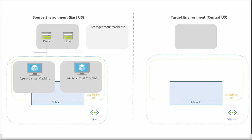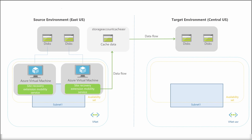Now let's understand how Site Recovery works. Let's say you have a source environment and a target environment, and in the source environment you have two virtual machines. When you configure Site Recovery, what it will do is install the Site Recovery Mobility Service — it is a virtual machine extension — and this service copies the data of your virtual machine to a storage account.